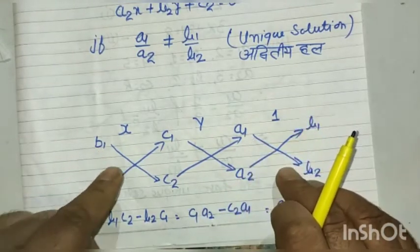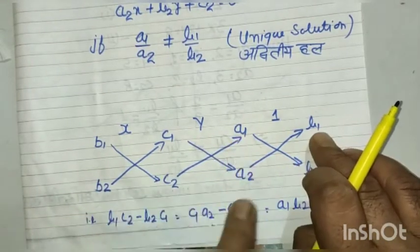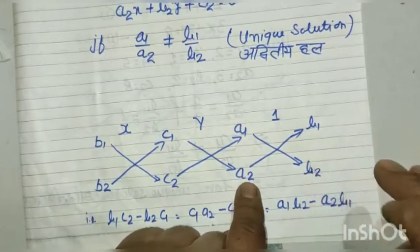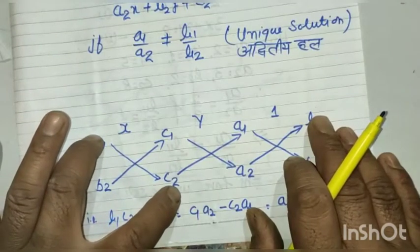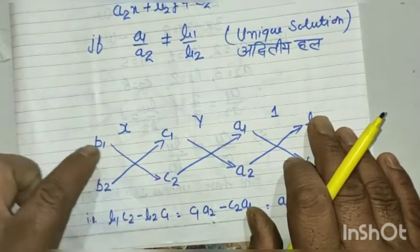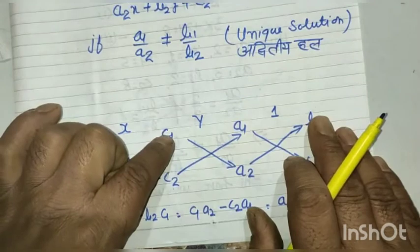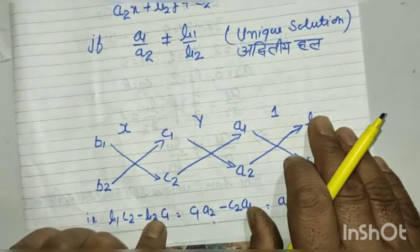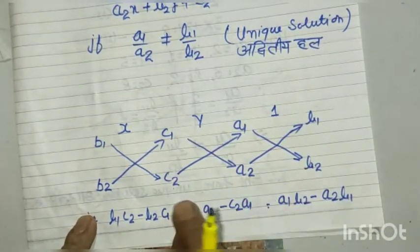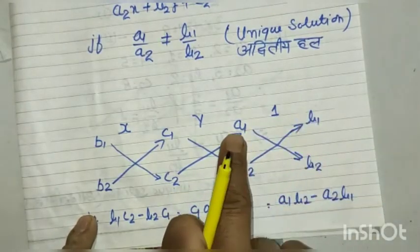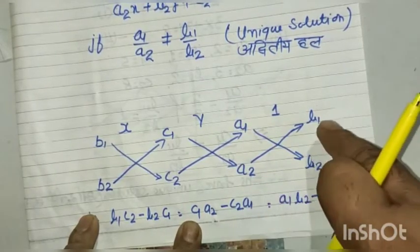Then, using the cross multiplication diagram: b1, c2, a2, b1, b2, c2, a2, b2, b1, c2. The arrows indicate multiplication, and after b2·c1 we subtract. For y: c2·a1 minus c2·a2, divided by b2 minus a2·b1.